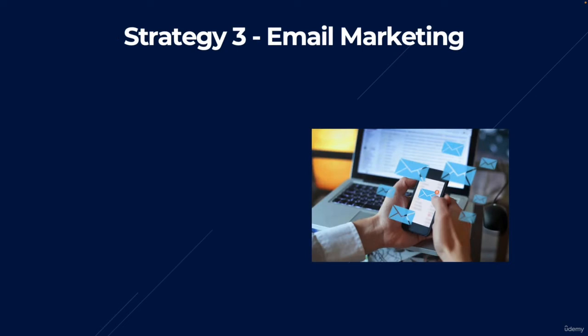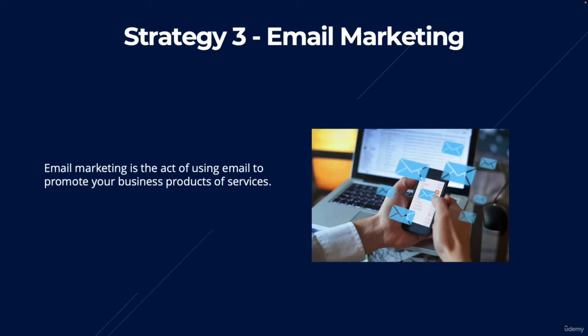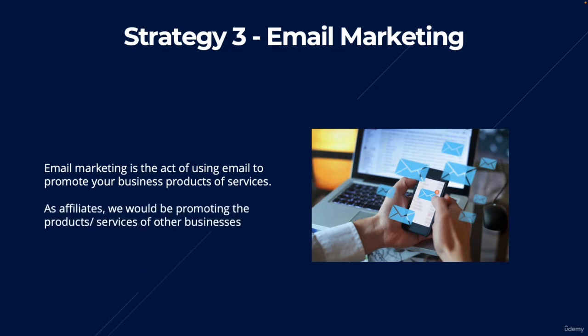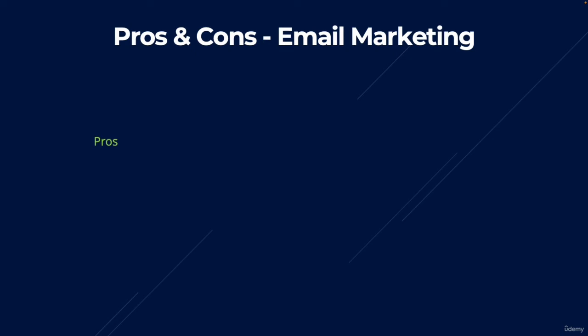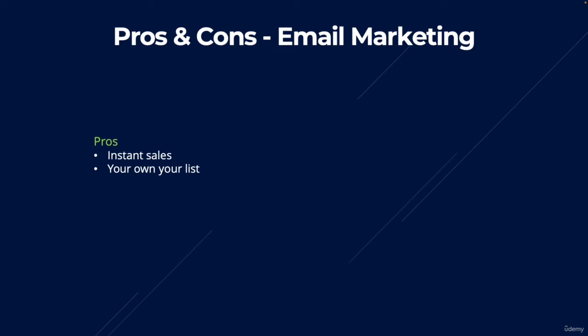Strategy number three is email marketing — the act of using email to promote products or services. As affiliates, we'd be promoting products or services of other businesses. The biggest pro of email marketing is that you can get pretty much instant sales. If you already have a big email list, you can send out an email with an offer and people can buy it instantly. The second and most important benefit is that you own your list — it's your asset.